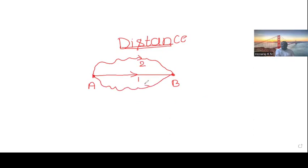This is path 2, this one is path 3. Path 1 is the shortest path. That is displacement. Shortest path between initial and final position is displacement.